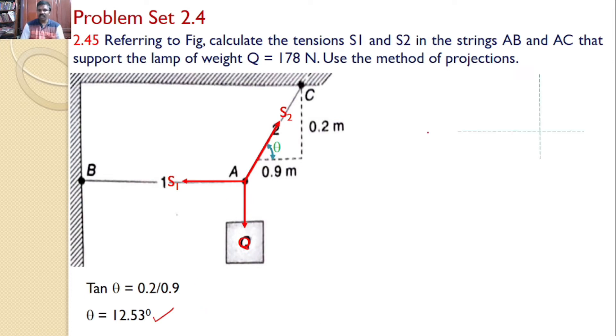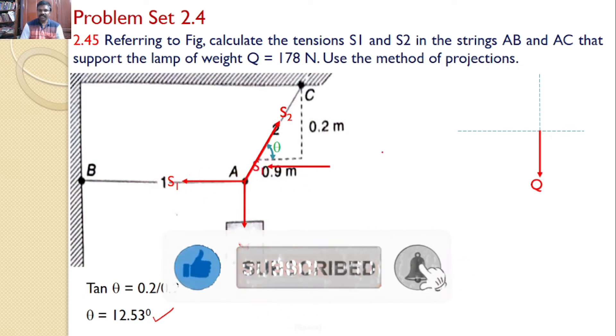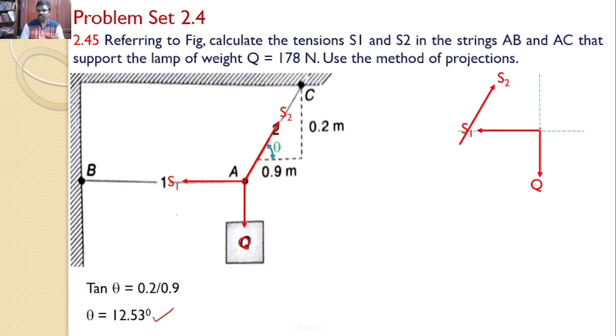Let us transfer all these three forces onto separate XY plane for easy analysis. First, I am transferring the force, vertical force Q. Next, that is S1. Next force is S2 and we know that this force makes an angle 12.53 degrees with the horizontal. Now the first force is Q, that is 178 newtons is vertical force. So there is no horizontal component and hence Q is equal to 178 kilonewtons acts vertically downwards.